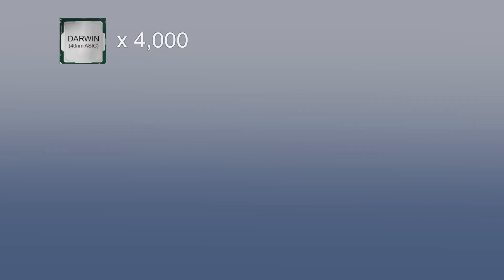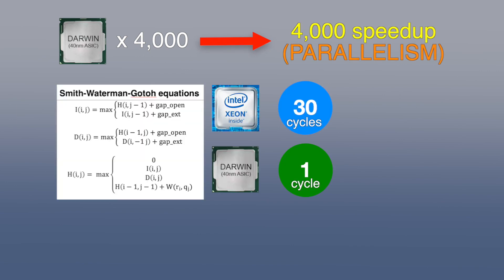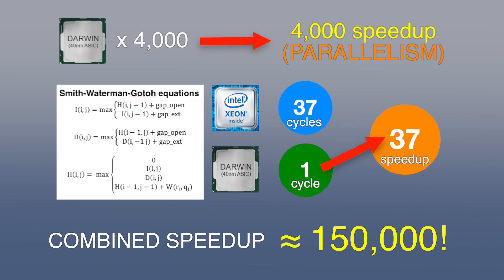And because we have such an efficient core, we can easily put 4,000 of them down, and that gives us a speed-up of 4,000 due to parallelism. Our little core is actually faster than a CPU as well, so we get another factor of about 40 speed-up. So the combined speed-up is a factor of about 150,000, but most of that actually comes from parallelism. A little bit of it comes from the specialization.